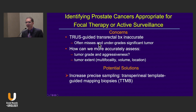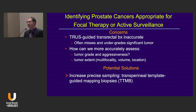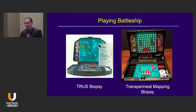How can we more accurately assess tumor-grade aggressiveness, tumor extent, multifocality, volume, and location if we're going to be doing focal therapy? One potential solution is to increase our sampling — and in this case, increase precise sampling, not just more cores, but where those cores are located. That's the so-called transperineal template-guided mapping approach.